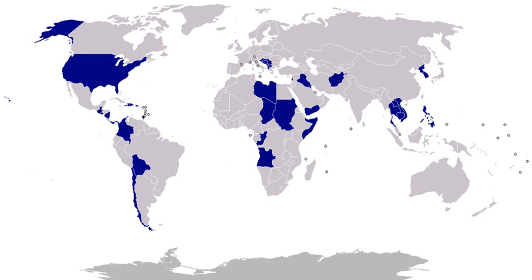1846–1848, Mexican-American War: on May 13, 1846, the United States recognized the existence of a state of war with Mexico. After the annexation of Texas in 1845, the United States and Mexico failed to resolve a boundary dispute and President Polk said that it was necessary to deploy forces in Mexico to meet a threatened invasion. The war ended with the Treaty of Guadalupe Hidalgo, signed on February 2, 1848. The treaty gave the U.S. undisputed control of Texas, established the U.S.-Mexican border of the Rio Grande, and ceded to the United States the present-day states of California, Nevada, Utah, Arizona, New Mexico, Wyoming, and parts of Colorado.